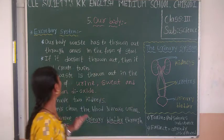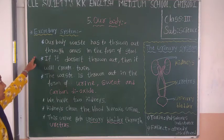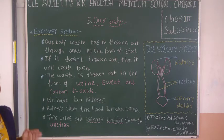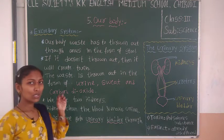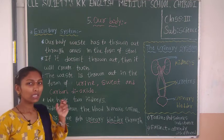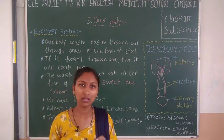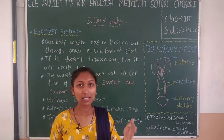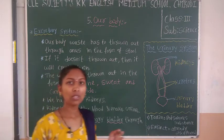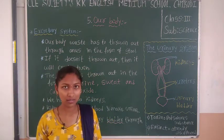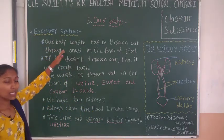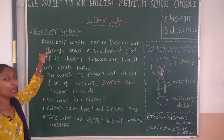Today we are going to discuss about the excretory system. In the last class we have discussed about the circulatory system. In the circulatory system, circulation of blood, oxygen and nutrients happens. And whatever waste product is produced, that is at last transferred to the excretory system. Whatever waste our body produces comes to the excretory system, and this is the last system of our body.